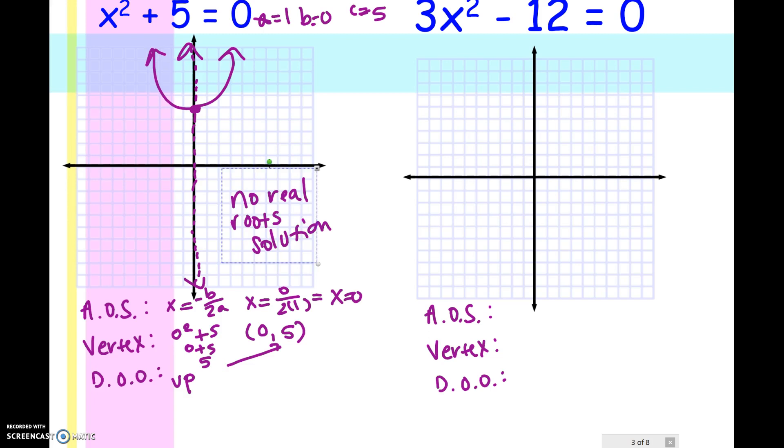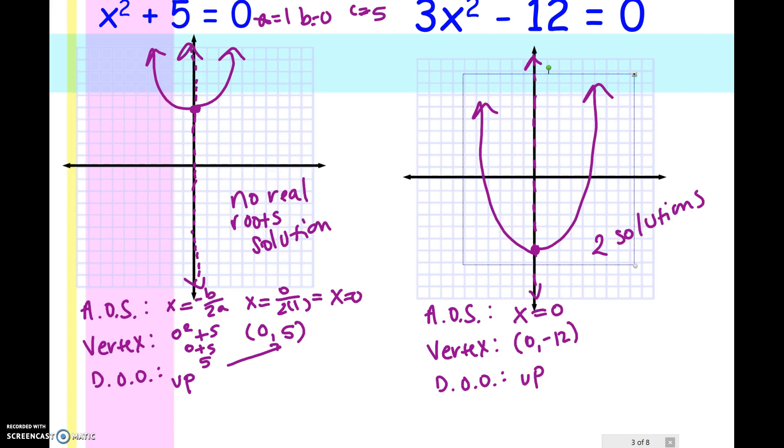Why don't you go ahead and try the next one. Find the axis of symmetry, the vertex, and the direction of opening, and see how many solutions you have. Okay, so go ahead and check your answer. Your axis of symmetry, again, is x equals 0 because B is 0. When you plug that into your x squared, you get negative 12. So 0, negative 12 is our vertex. I went by 2s: 2, 4, 6, 8, 10, 12. And then it goes up because the A is positive. So I know it's going to hit the x-axis in two places. I don't know exactly where because I didn't find exact points, but I do know that it will have two solutions.